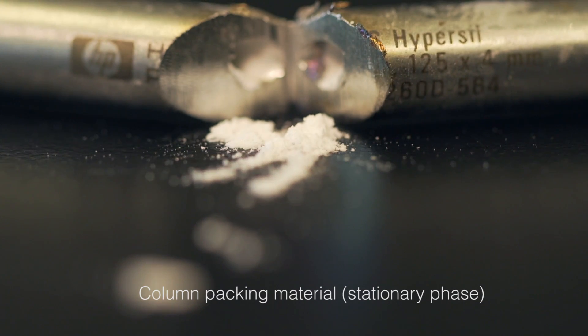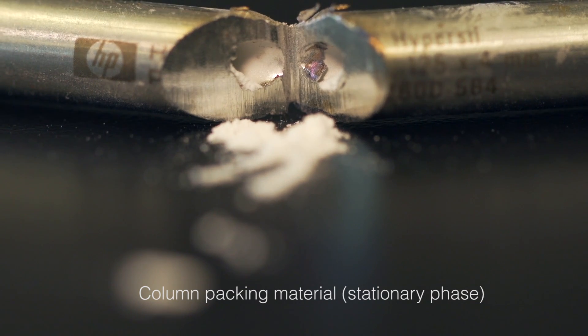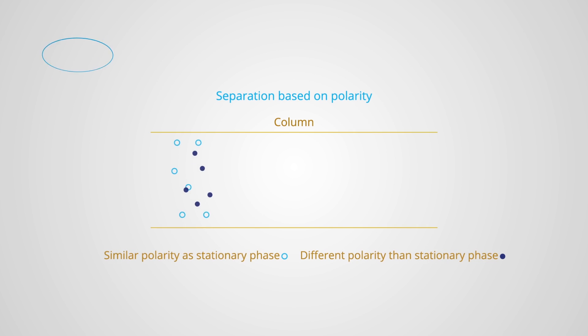The analyte's components separate according to their ability to interact with the stationary phase. Those that interact more with the stationary phase have a longer retention time, whereas the components that interact less with the stationary phase and more with the mobile phase have a shorter retention time.